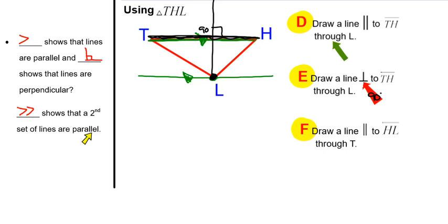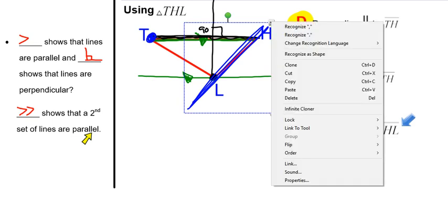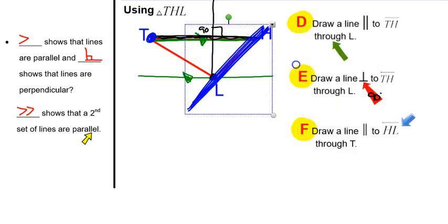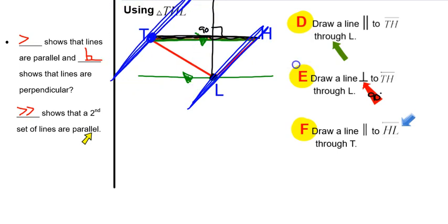The last question asks us to draw a line parallel to HL through T. HL is the bottom-left side of the triangle, and the line has to go through point T. We draw something with the same slant as HL going through T. To show those lines are parallel and distinguish them from the first set, I use double arrows on both lines.